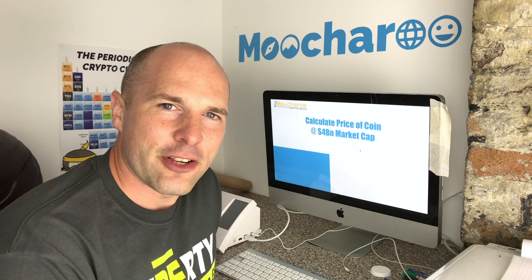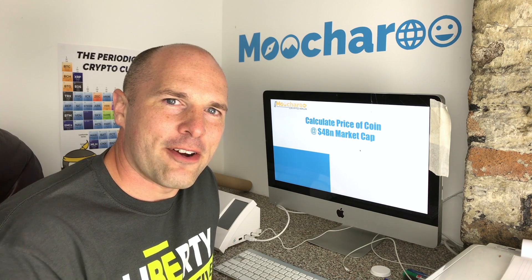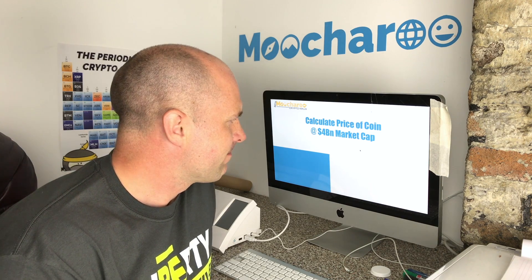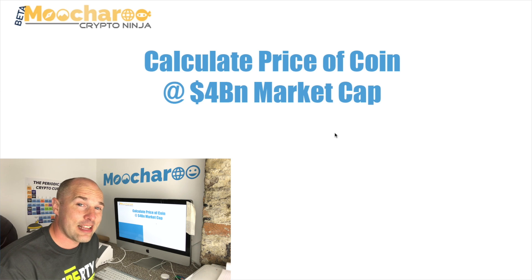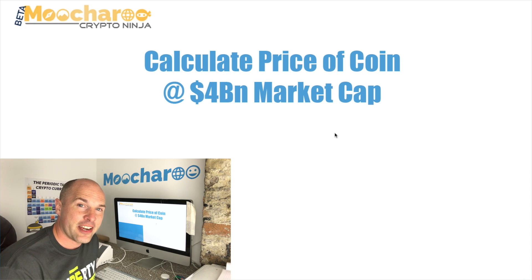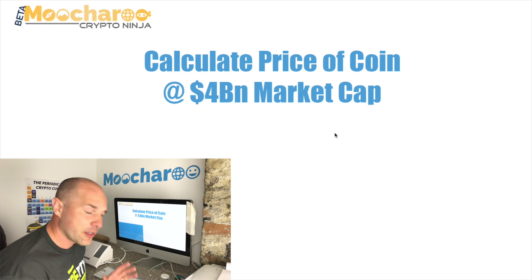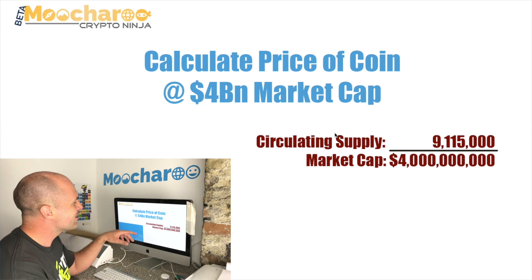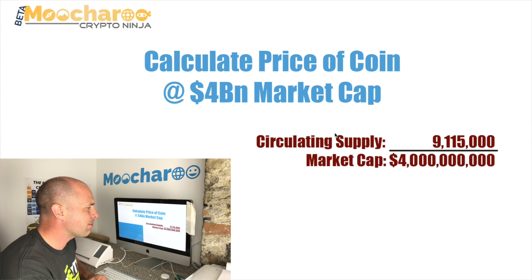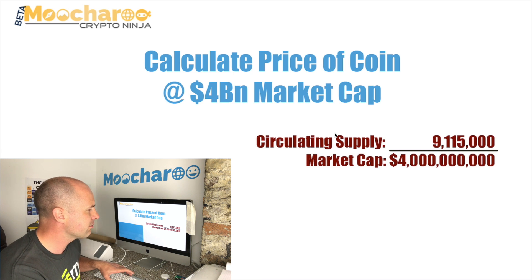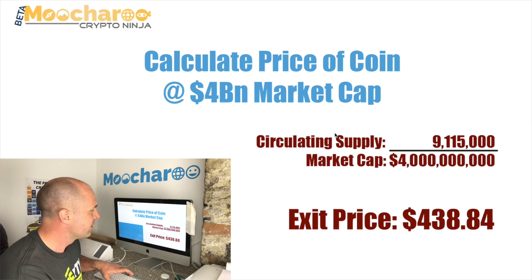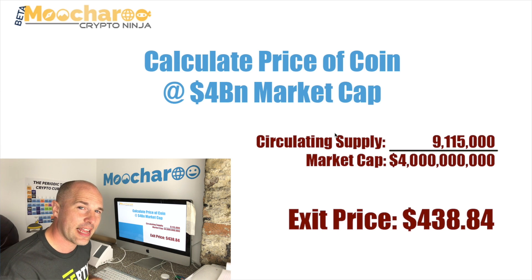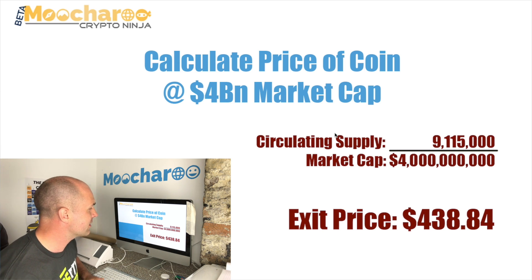This is just laying it all out flat for everything. All we're looking for is a level playing field for all of the coins - let's say they've all got the same market cap and then evaluate them from there, so they're all level. So what we want to do is take a market cap of four billion and divide that by the current circulating supply, which will give you your exit price.